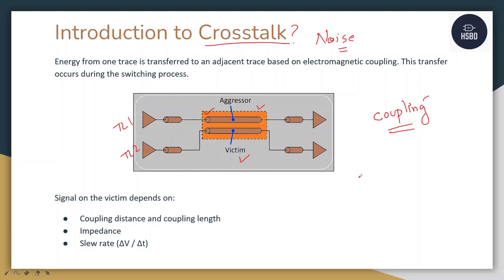When does this happen? Basically whenever there is a switching of signal from 0 to 1 or 1 to 0 in the transmission line, the crosstalk occurs. Crosstalk occurs between aggressor to victim as well as victim to aggressor — it happens both ways.